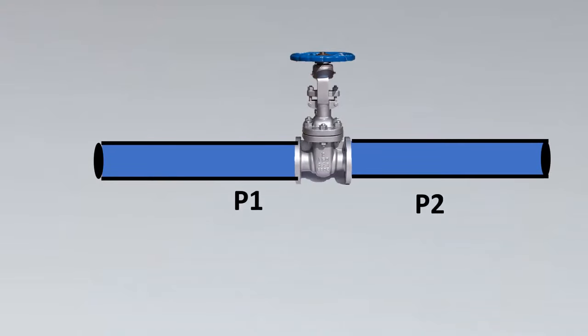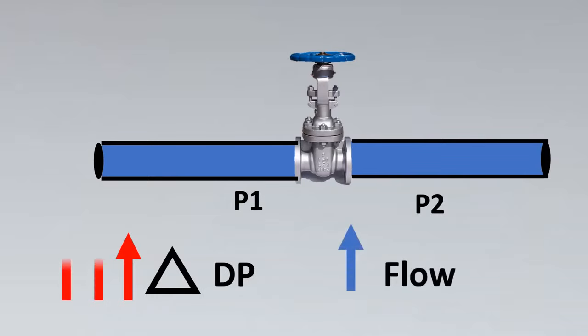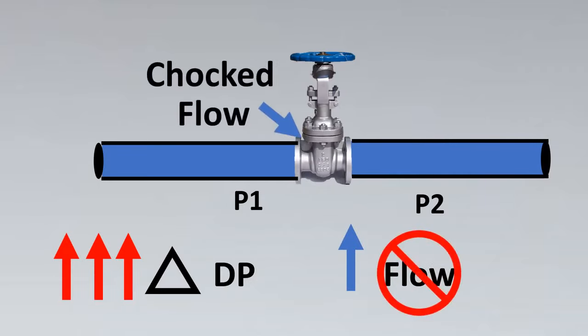Imagine this is your valve and this is your pressure drop happening. We know that if we increase DP there is going to be an increase in flow. But if we keep increasing DP, at a point of time flow will not increase. This point is called choked flow.